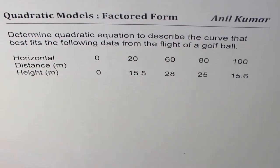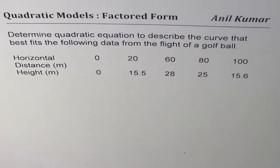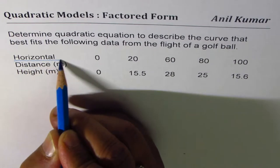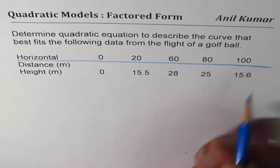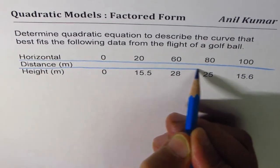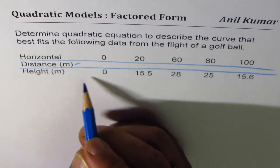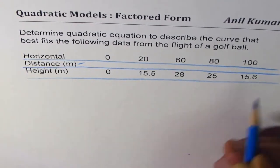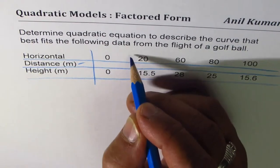I'm Anil Kumar and here is a question from my subscriber on quadratic modeling. The question is: determine a quadratic equation to describe the curve that best fits the following data from the flight of a golf ball. As the horizontal distance increases — measured in meters — the height of the ball changes. That's the table of values we are going to work with.